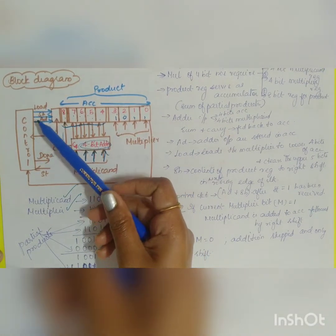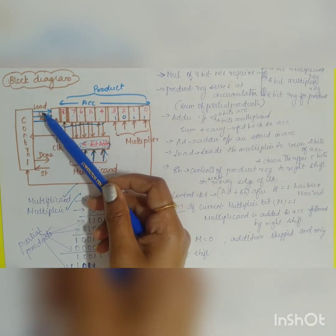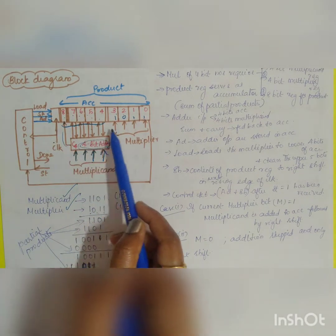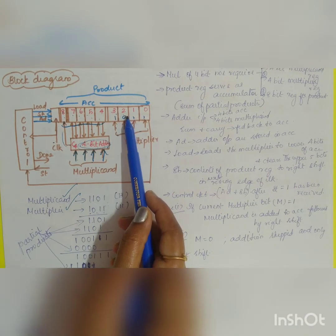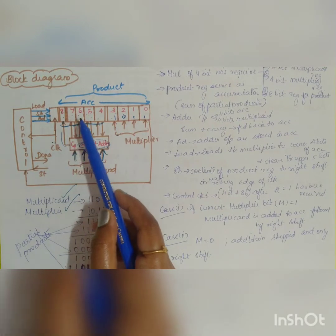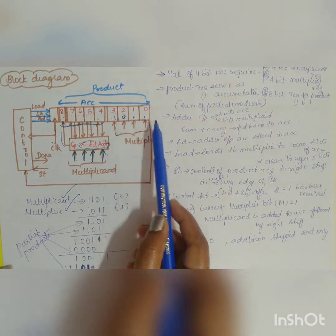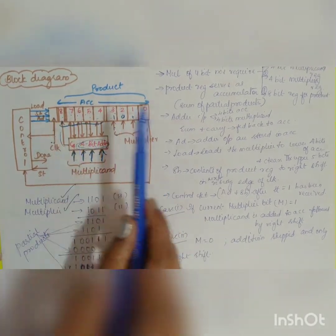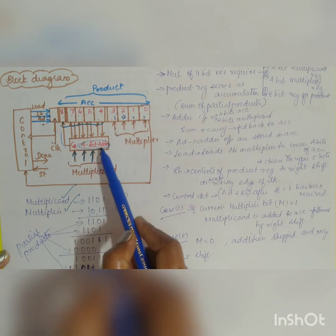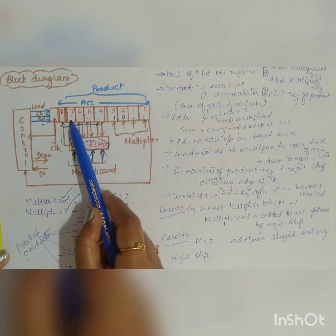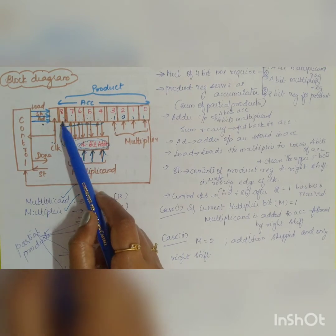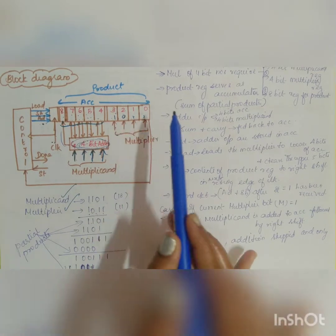The control unit has three signals: load, shift, and add. The load signal, on the rising clock edge, stores the multiplier data into the lower four bits of the accumulator. The shift signal, on the rising clock edge, shifts all accumulator data one position to the right. The add signal causes the adder output to be stored into bits 4–7 of the accumulator, and the carry is stored in bit 8.